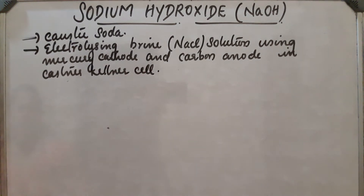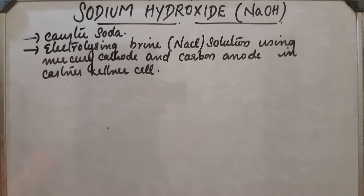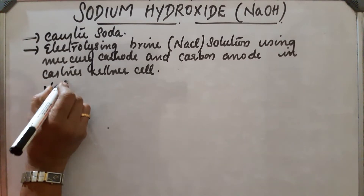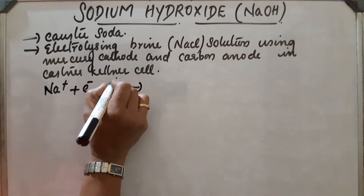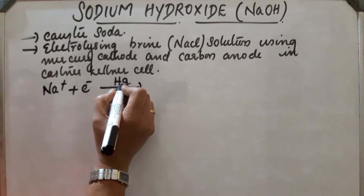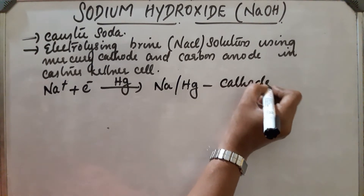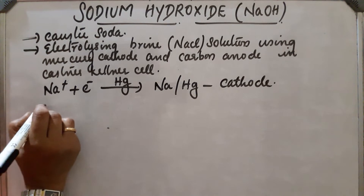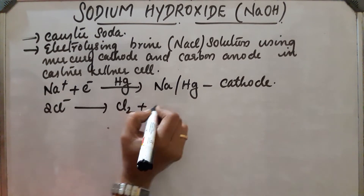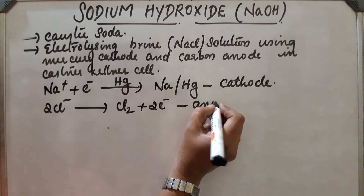The Casner Kellner cell is used for the manufacture of sodium hydroxide or caustic soda. Sodium metal gets discharged at the cathode, combines with mercury to form sodium amalgam. The reaction is: Na⁺ + e⁻ reacts with mercury to form sodium amalgam, taking place at the cathode. At the anode, chlorine gas is liberated: 2Cl⁻ gives Cl₂ gas and 2 electrons.